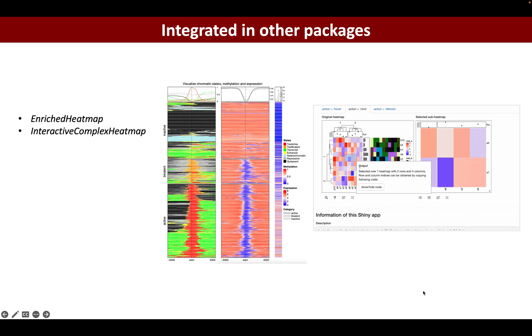The ComplexHeatmap package has also been integrated in other packages, for example the EnrichedHeatmap which specifically uses a heatmap to visualize two different types of genomic features and to see how they are enriched for each other.